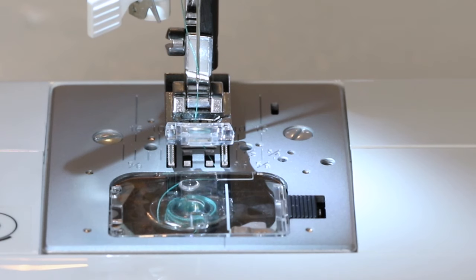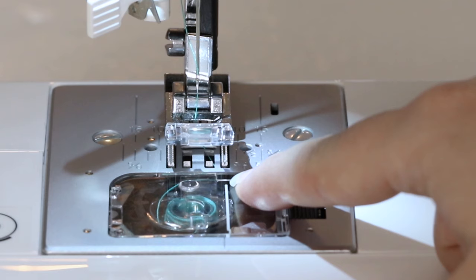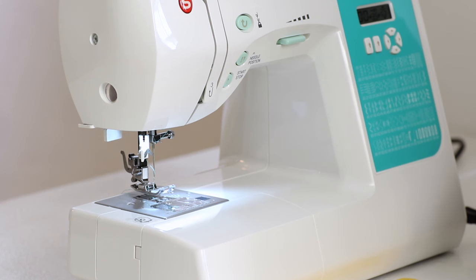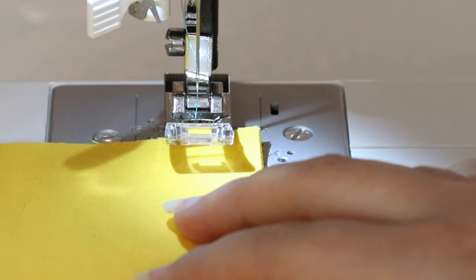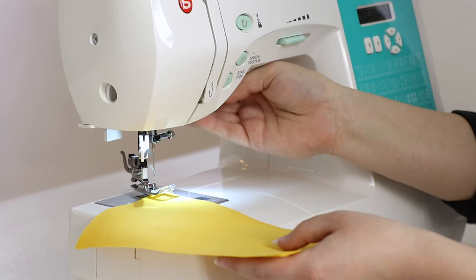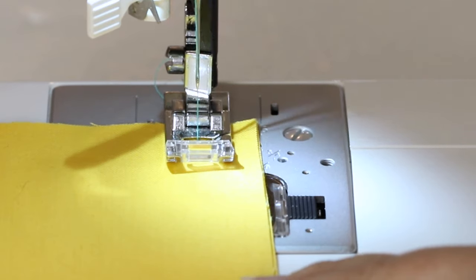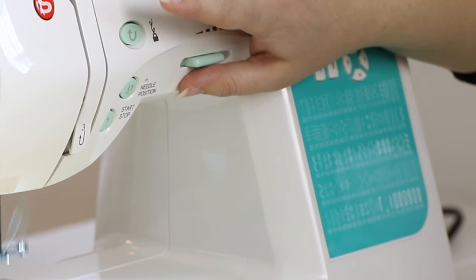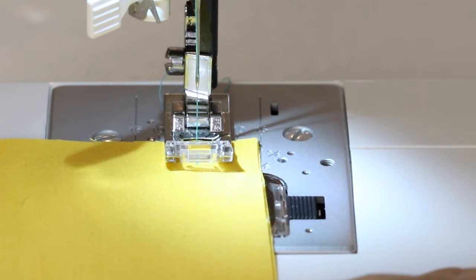When sewing a seam, you'll notice on your needle plate that there are lines with markings such as 3/8 and 5/8. Many commercial patterns I use have a 5/8 inch seam allowance, so I'm going to place my fabric under the presser foot in line with the 5/8 mark. Lower the presser foot and sew forward a few stitches. Now I'm going to press and hold the reverse button to sew backwards a few stitches. Release the button and sew forward along your seam.